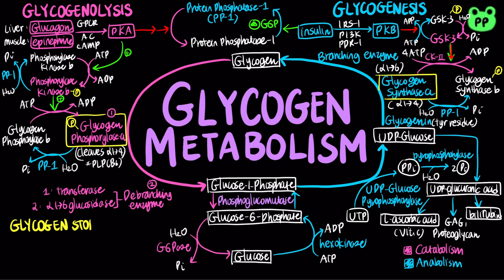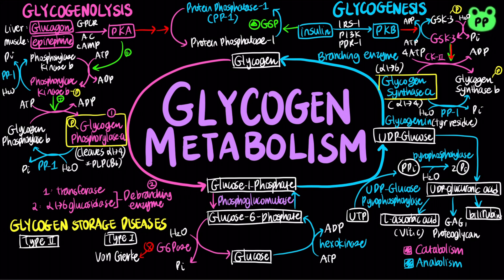Glycogen storage disease is a metabolic disorder caused by enzyme deficiencies in either glycogenolysis or glycogenesis. Type 1 glycogen storage disease is known as von Gierke disease. It is caused by a deficiency in glucose-6-phosphatase, resulting in the liver being unable to properly break down stored glycogen, leading to severe low blood sugar. Type 2 glycogen storage disease is known as Pompe disease. It is caused by a deficiency in lysosomal alpha-glucosidase enzyme, resulting in an accumulation of glycogen in lysosomes, leading to damages in muscle and nerve cells throughout the body.